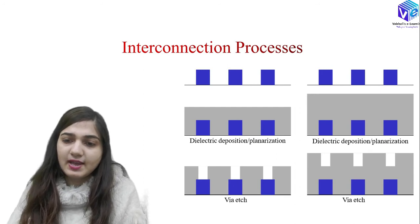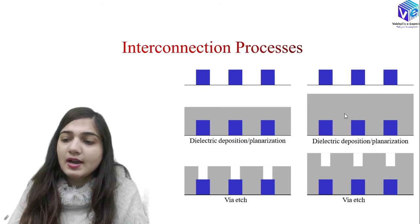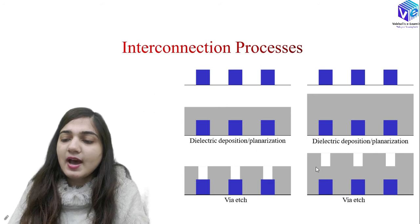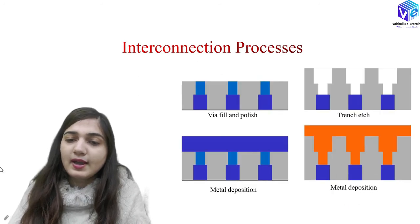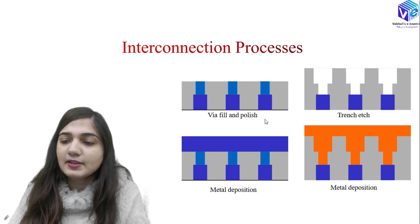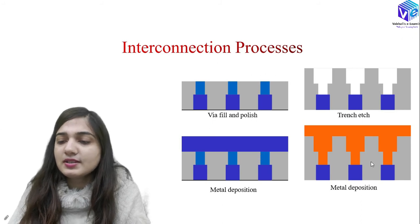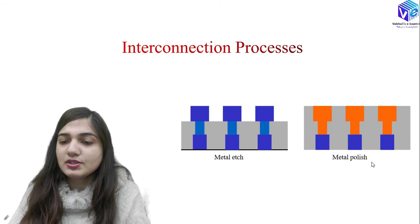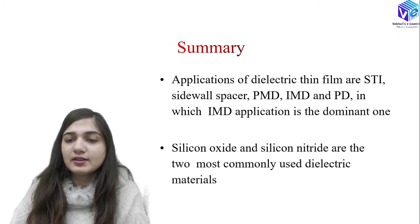Now looking at the interconnection process. First we do the dielectric deposition or planarization, again dielectric deposition or planarization, then a VIA fill step. After the dielectric deposition, we get step coverage and then the VIA fill and polish process, followed by trench etch — etching up to the trench depth. After that, metal deposition is performed, where copper can be used, followed by the metal etch and metal polish process. This is the full interconnection process.